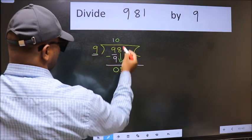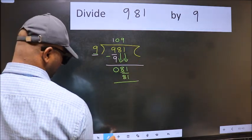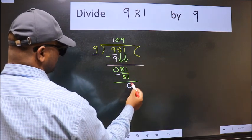When do we get 81 in the 9 table? 9 nines 81. Now we should subtract. We get 0.